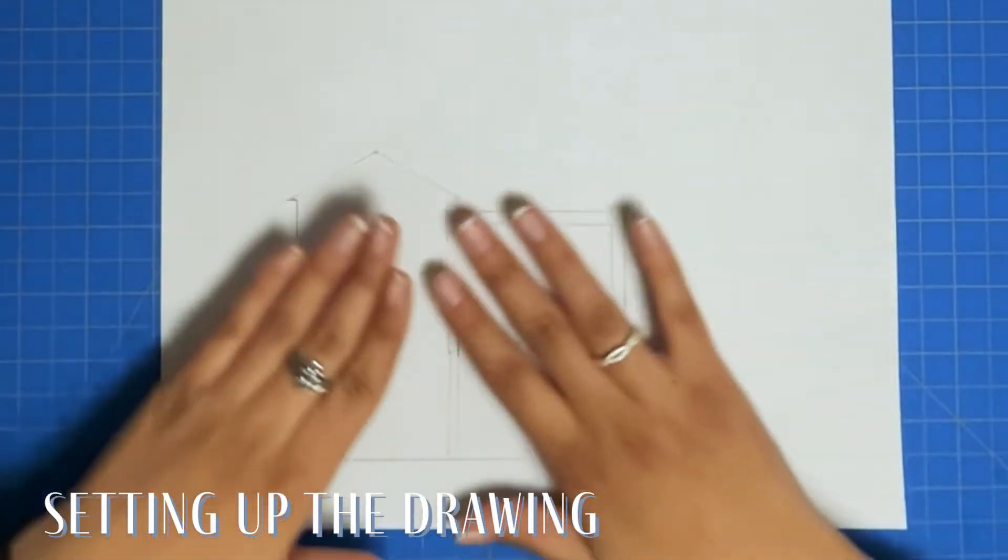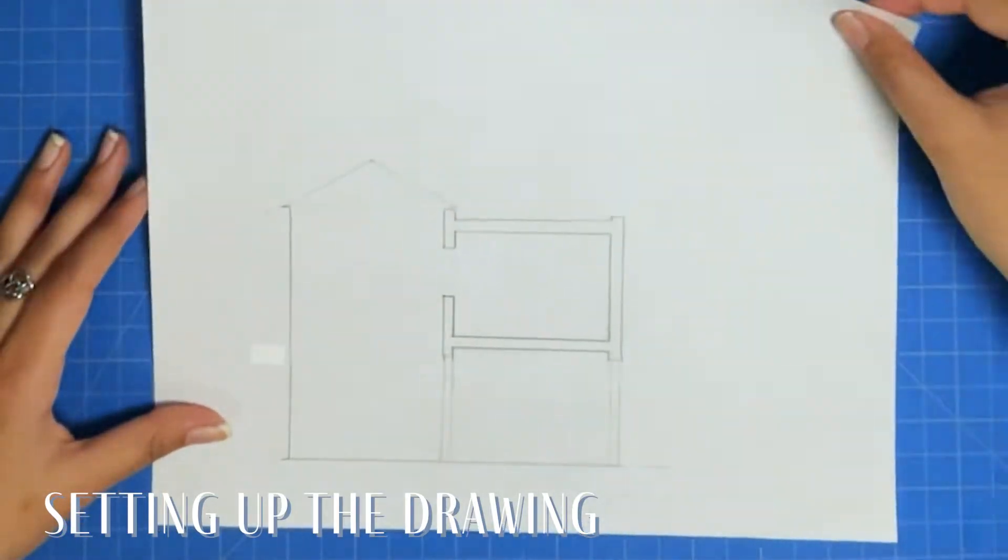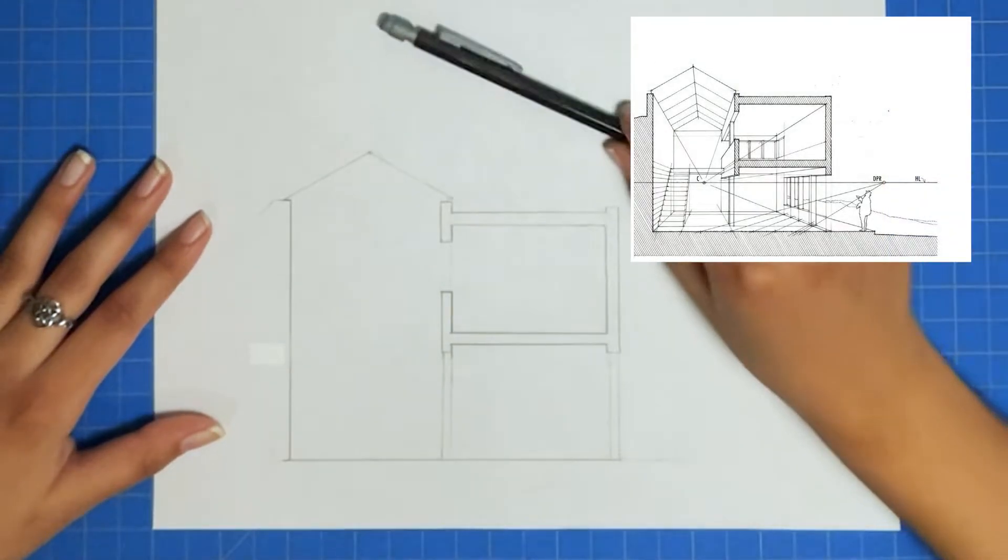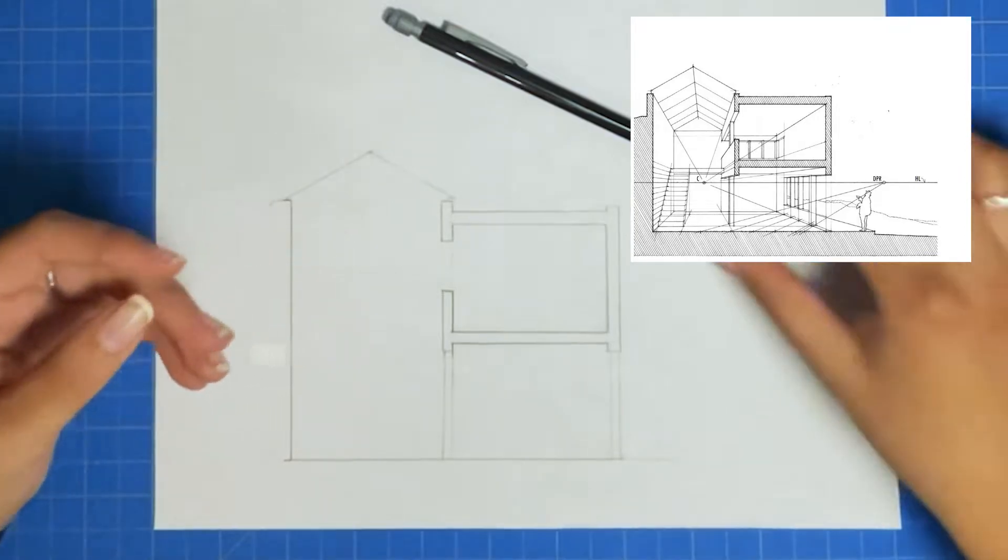So now we need to set up our drawing. The first thing you're going to need is your picture plane or in this case a piece of paper and your building section cut. Mine is a quick sketch from the architectural graphics textbook and you're going to need a pencil and a ruler as well.